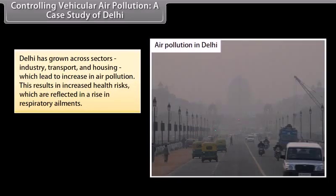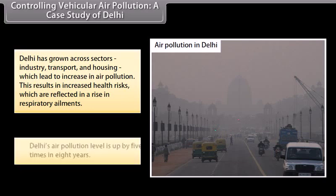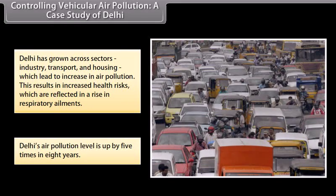Controlling vehicular air pollution: a case study of Delhi. Delhi has grown across sectors — industry, transport, and housing — which has led to an increase in air pollution. This results in increased health risks reflected in a rise in respiratory ailments. Delhi's air pollution level is up by 5 times in 8 years.